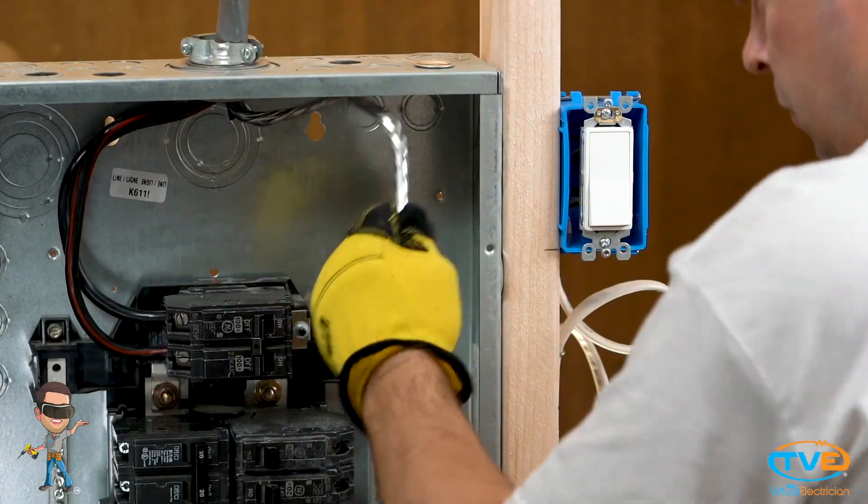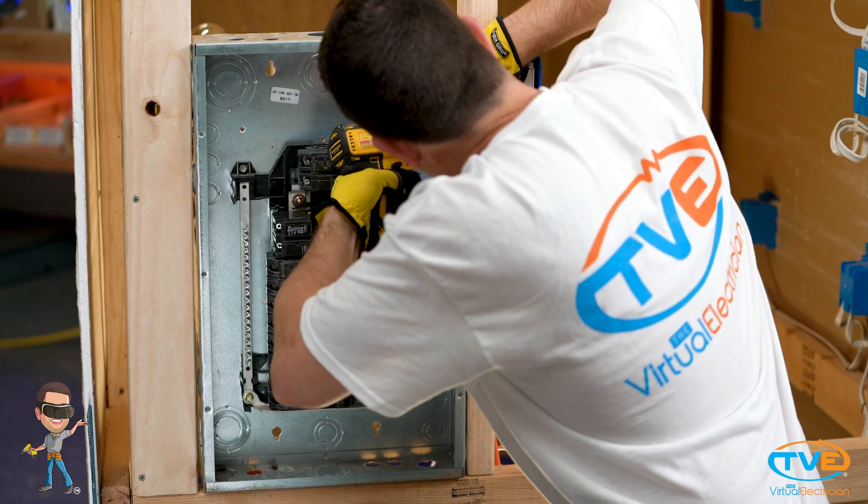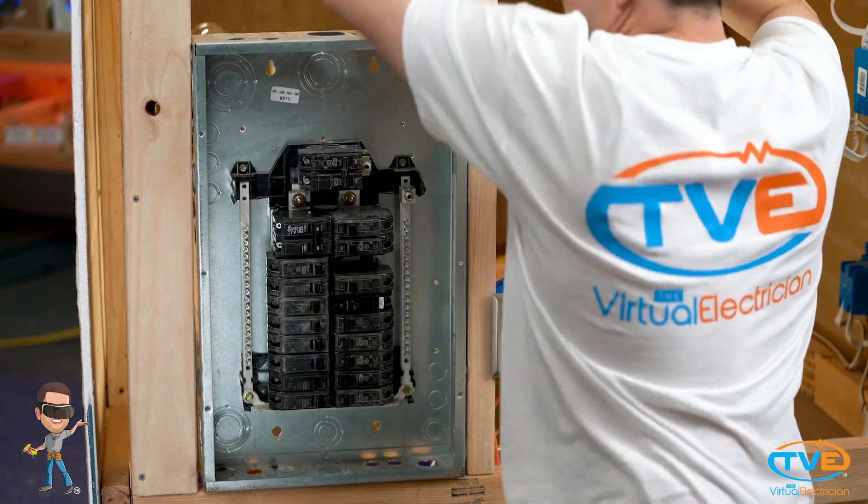Remove the main service wires from the main lugs. Unscrew the panel screws. Now you can pull out your old panel.